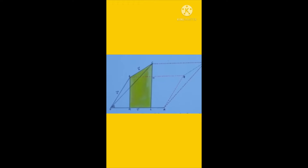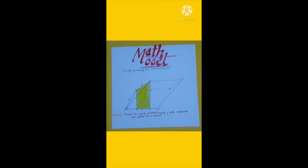Then the area of parallelogram OAPC is equal to OA cross CL. Then OA into (LN plus NC) is equal to OA into (BM plus NC). Then the area of parallelogram OAQB plus the area of parallelogram BQPC is mod of c vector cross a vector plus mod of c vector cross b vector.